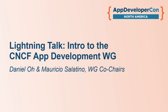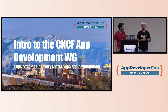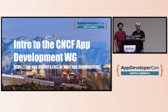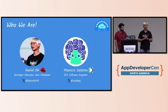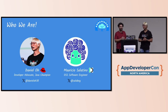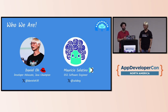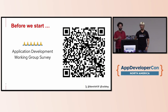Hello everybody, thanks for joining today. We are super happy to be here at QCon. Marcio and I are going to talk about introducing the CNCF working group for application development. My name is Daniel Oh, I'm working from Red Hat and I'm a CNCF ambassador, developer advocate, and Java champion. I'm Mauricio Salatino, software engineer for Diagrid. We are both co-chairs of the application development working group, along with Thomas Vitale who didn't make it here, and an amazing group of enthusiasts.